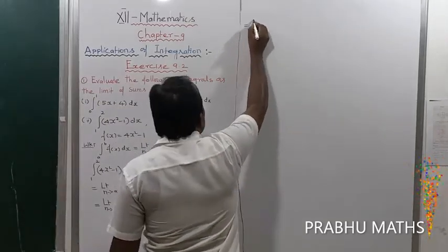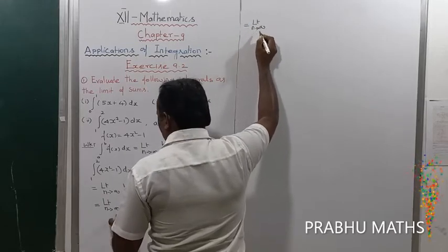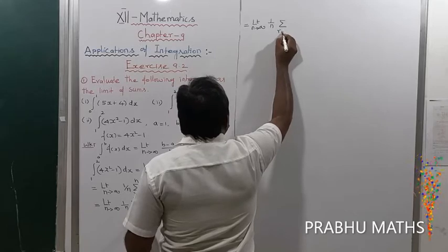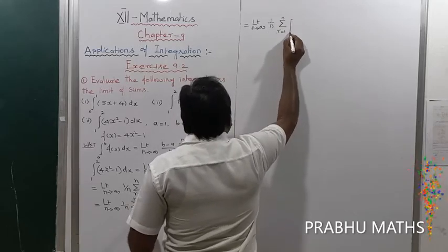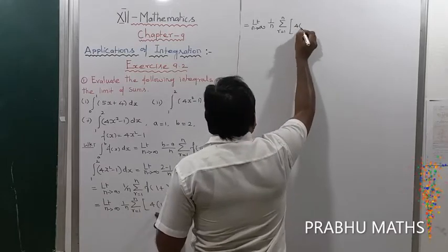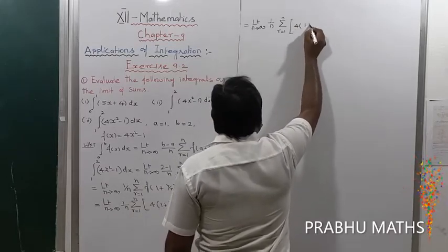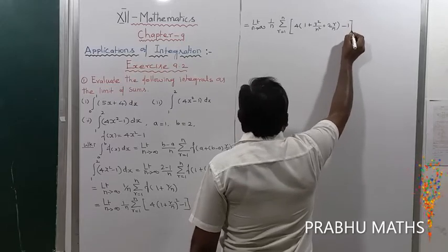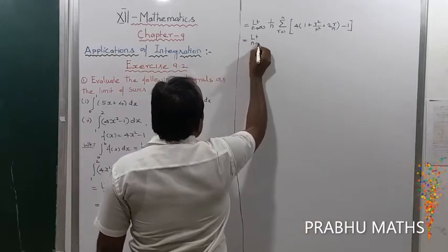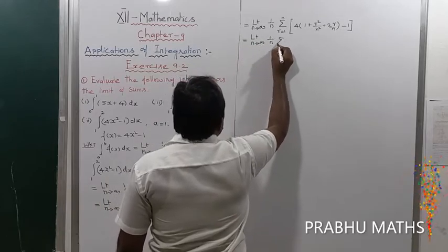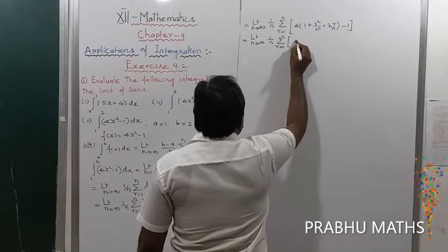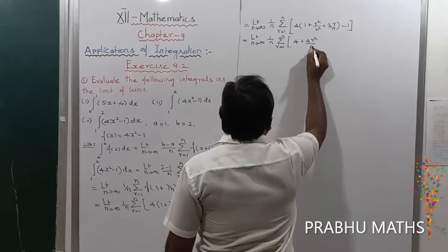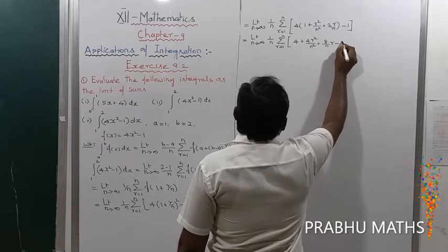That is equal to: limit n tends to infinity of (1/n) times the summation from r equals 1 to n, into 4 times — applying the (a+b)² formula — (1 + r²/n² + 2r/n) minus 1. Expanding: limit n tends to infinity of (1/n) times the summation from r equals 1 to n of (4 + 4r²/n² + 8r/n minus 1).